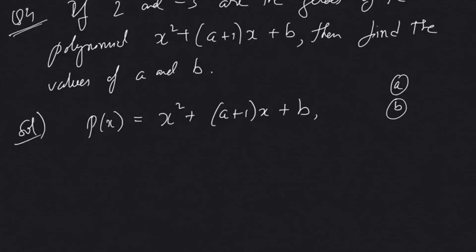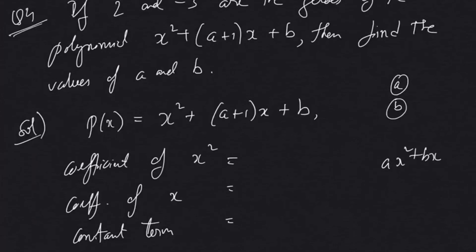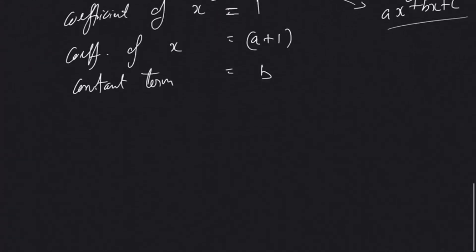Before proceeding further, let's identify the coefficients by comparing with the model quadratic equation ax² + bx + c. Comparing the given polynomial: the coefficient of x² is 1, the coefficient of x is (a + 1), and the constant term is b.